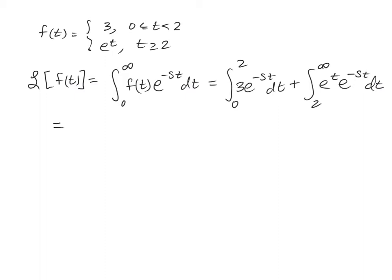The next thing we'll do then is now find these integrals. So we're going to have negative 3 over s e to the negative st. This time, though, from 0 to 2 plus,